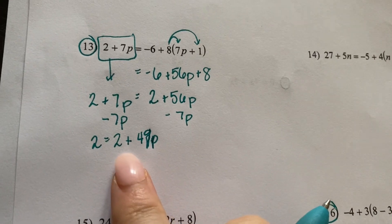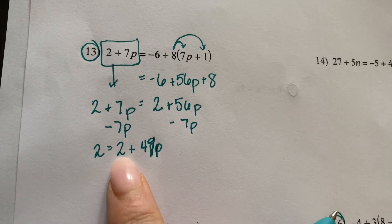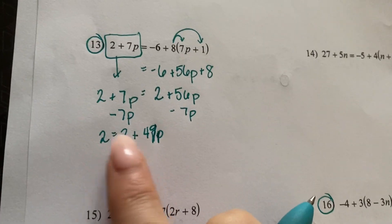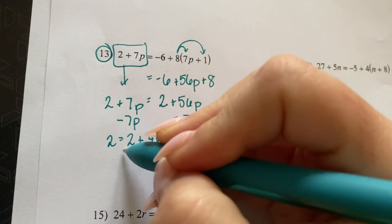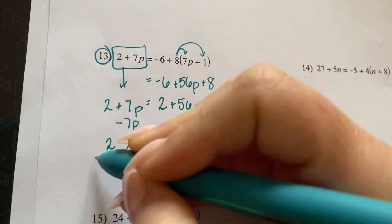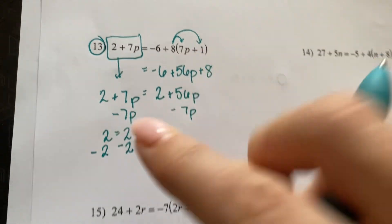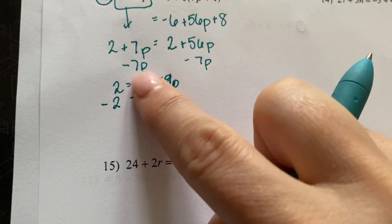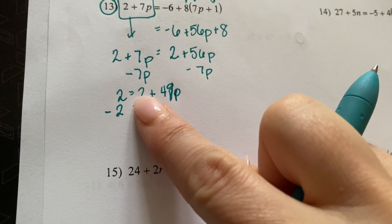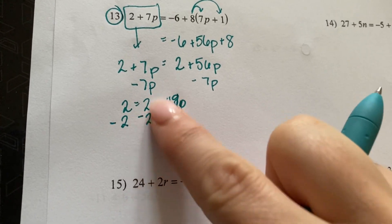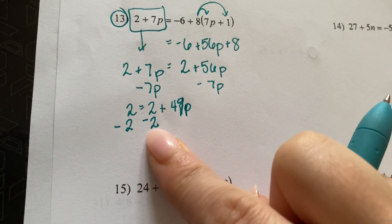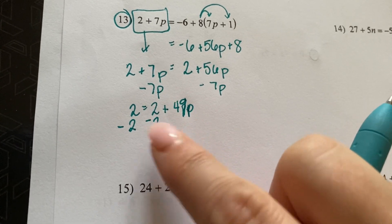Alright, so now I'm going to bring this 2 over, which I have a feeling you can tell what's going to happen here. If I subtract this 2, I'm going to subtract this 2. I subtracted because that's a positive 2. So the opposite of a positive 2 would be a negative 2. So I'm subtracting 2.